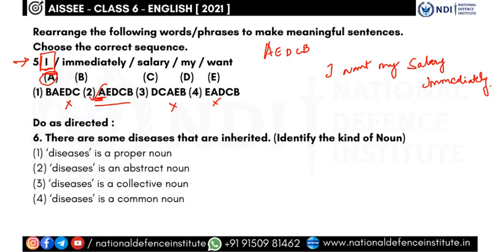A proper noun projects real, specific names. The sentence just says 'disease' — it doesn't specify what kind. For example, if it had said 'malaria,' that would be a proper noun because a specific disease is named. So we cancel the first option. 'Disease' is definitely not a collective noun either.